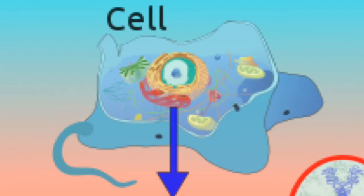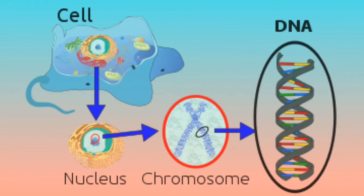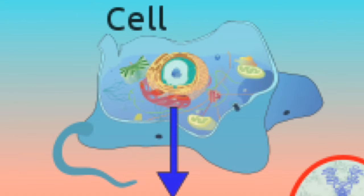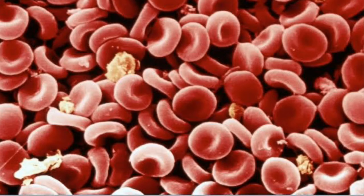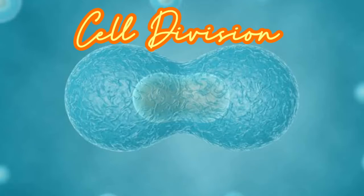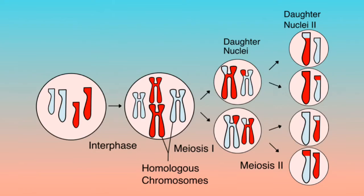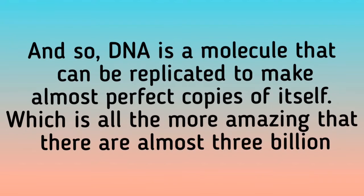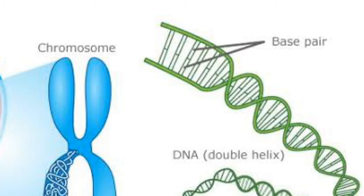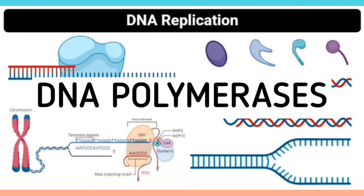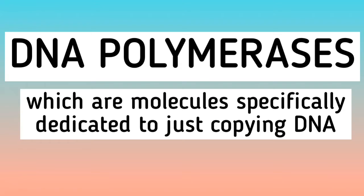If you think about it, each cell contains all of the DNA you need to make the other cells. We start out from a single cell and end up with trillions of cells. During that process of cell division, all of the information in a cell has to be copied perfectly. DNA is a molecule that can be replicated to make almost perfect copies of itself, which is all the more amazing considering that there are almost 3 billion base pairs of DNA to be copied. Replication uses DNA polymerases, which are molecules specifically dedicated to just copying DNA.